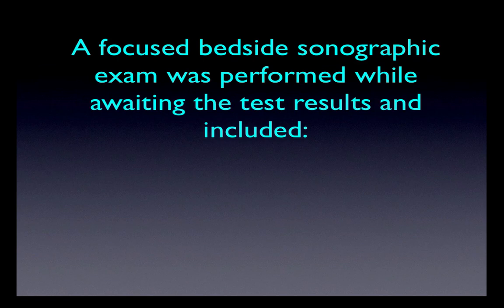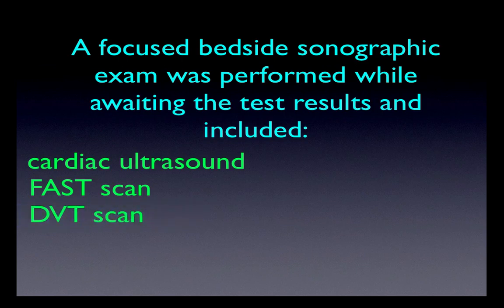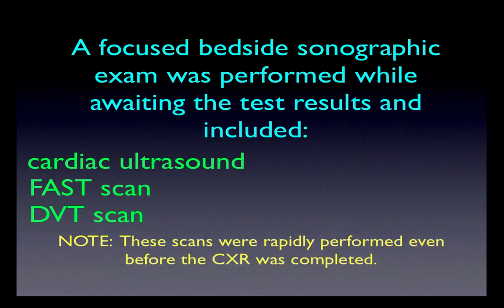A focused bedside ultrasound exam was performed while awaiting the tests, and it included the following: a cardiac ultrasound to assess whether or not he had dysfunctional segments as you would see with an acute coronary syndrome, a FAST scan of the abdomen to look for intra-abdominal bleeding, and a scan of both legs to see if he had a deep vein thrombosis, which can be seen in 50% of people with pulmonary emboli. It's important to realize how rapidly all of these tests could be done — the stat chest x-ray took slightly less than 10 minutes, but all these scans were completed by the time the chest x-ray was done.